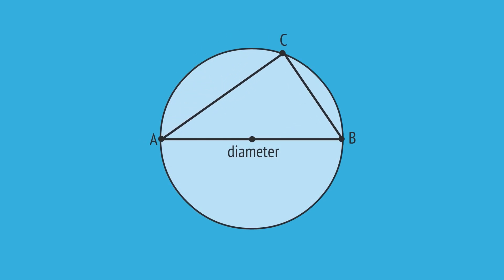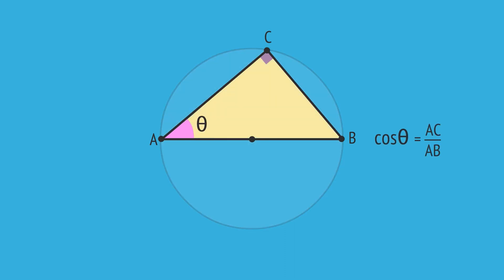Given any triangle in a semicircle, we know the angle inscribed is always a right angle. And because of this, we can write trig ratios for one of the acute angles, in this case, theta. Here, the cosine of theta is equal to the adjacent, AC, over the hypotenuse, AB.